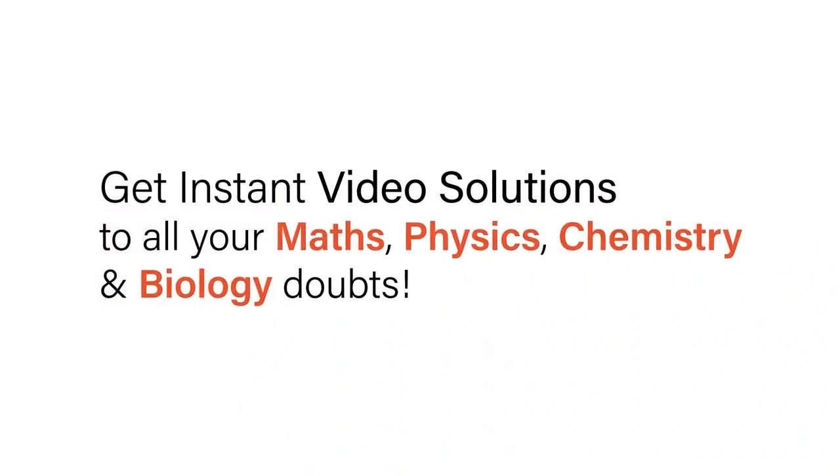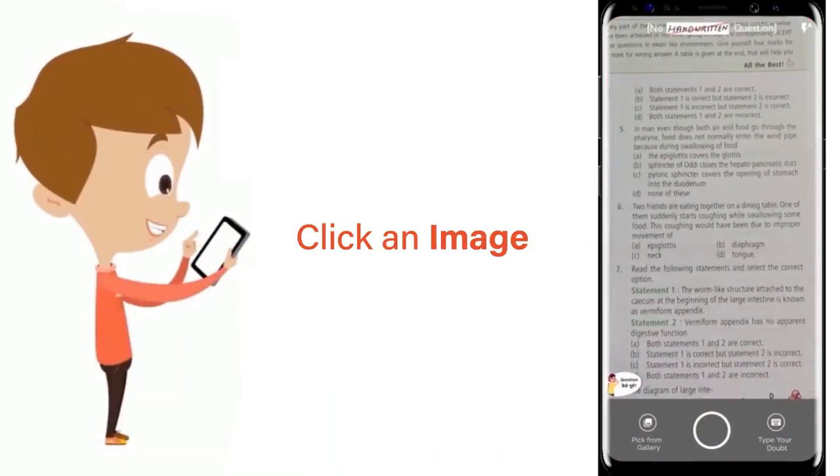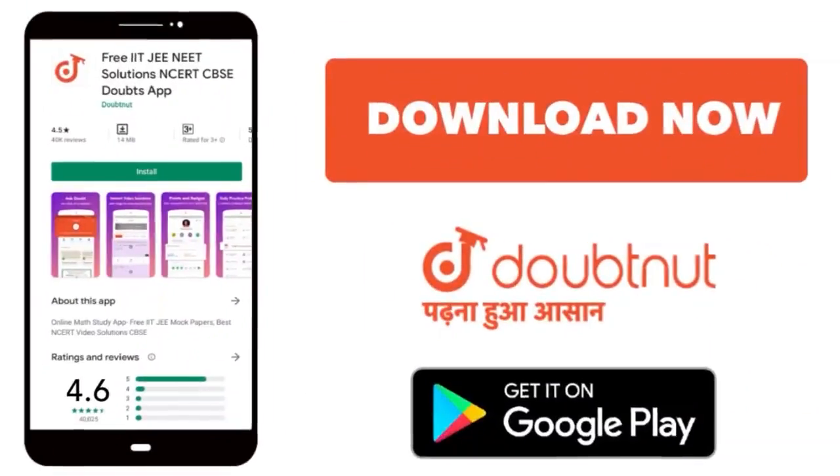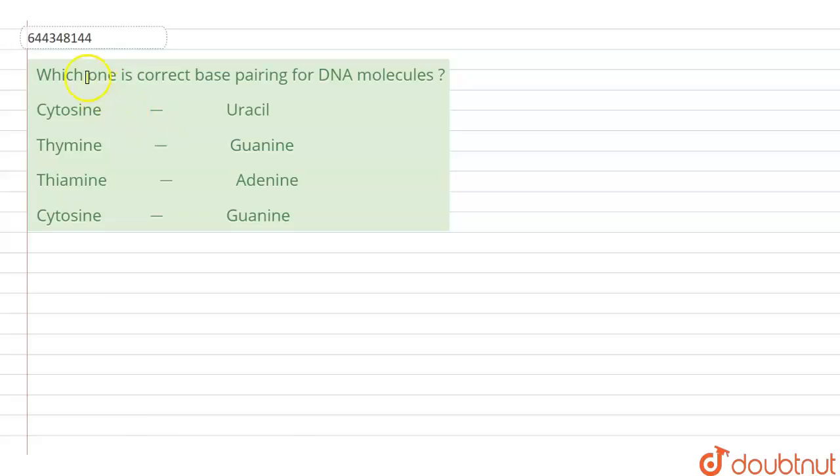With Doubtnut, get instant video solutions to all your math, physics, chemistry, and biology doubts. Just click the image of the question, crop the question, and get instant video solution. Download Doubtnut app today. Hello students, the question here says which one is the correct base pairing of the DNA molecule? So here we have certain nitrogen bases which are given here.